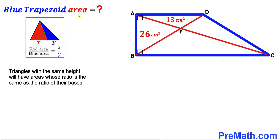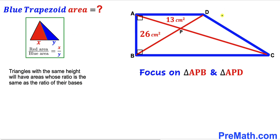Let's get started with the solution. Let's recall this crucial fact: if we have two triangles with bases x and y respectively, and both triangles have the same height, then the triangles will have areas whose ratio is the same as the ratio of their bases. We are going to apply this concept on this given problem. Focusing on triangles APB and APD — since 26 is twice 13, their area ratio is 1 to 2.